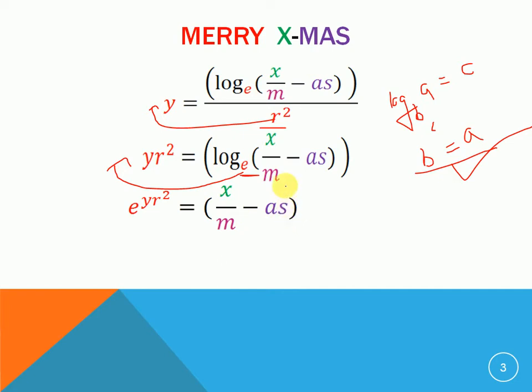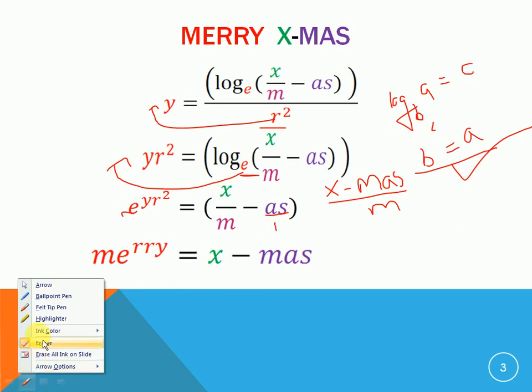Fantastic. Amazing. And now you will see how beautiful mathematics is. You can find the LCM of x by m and a s by one. The LCM is m. So you can write it as x minus m a s by m and then you transpose this m to the other side and you will see that everything works so beautiful. The best mathematical way of wishing. Merry x-mas. You transpose m there. You get m e to the power y r square. I write r in front. r into r into y that is r r y is equal to x minus m a s. So Merry x-mas. How beautiful it is.